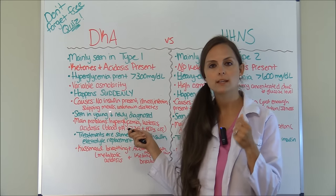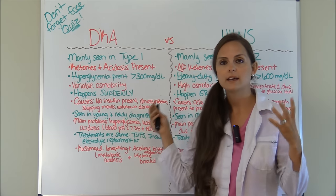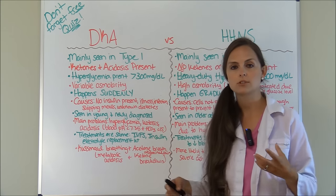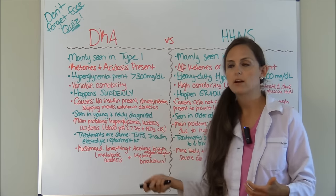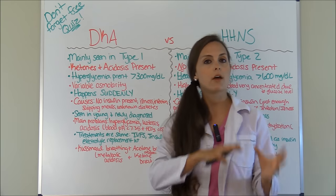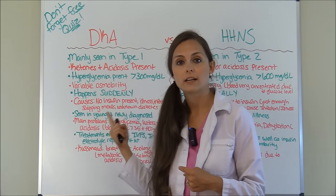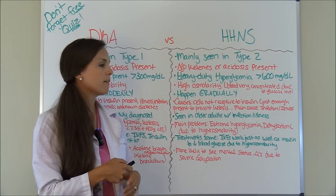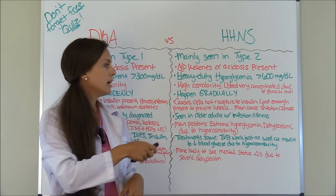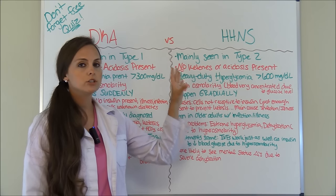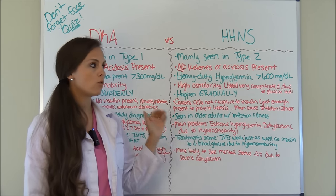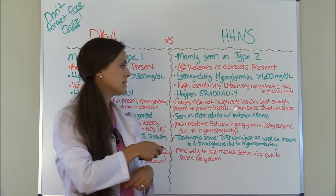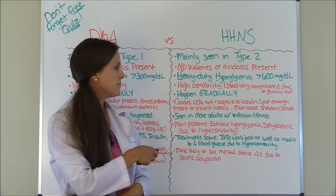DKA causes include no insulin present — maybe they haven't been taking their insulin injections at all. Illness or infection can trigger it because the body needs more insulin under stress. Skipping meals or not knowing they're diabetic is another cause — DKA is often one of the first signs in newly diagnosed diabetics. For HHNS, the cells are not receptive to insulin and there's just not enough present, but enough to prevent ketosis. The main cause of HHNS is usually a severe infection or illness. DKA is mainly seen in young and newly diagnosed patients, while HHNS is mainly seen in older adults presenting with a severe infection.